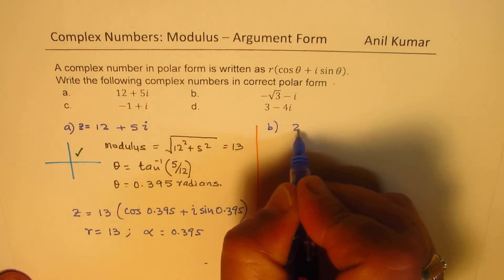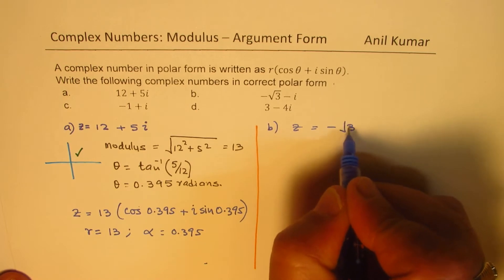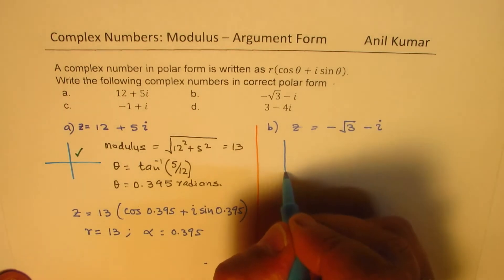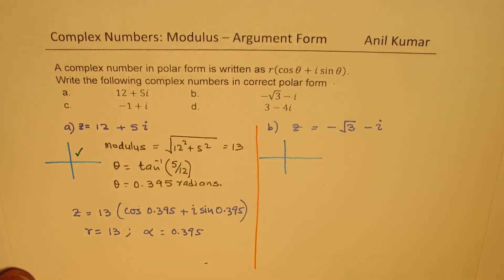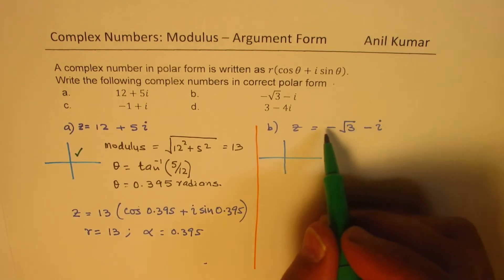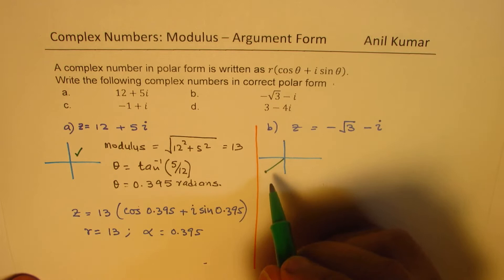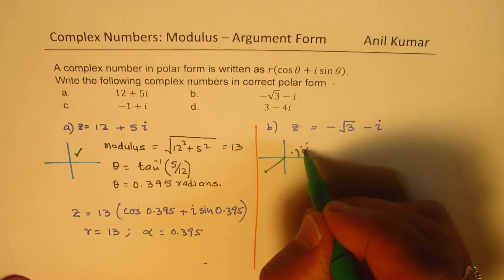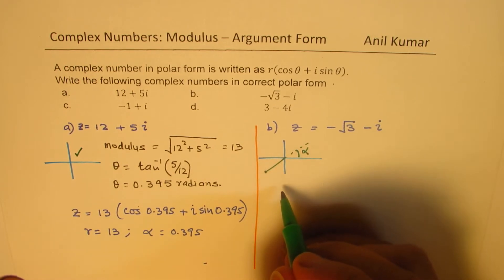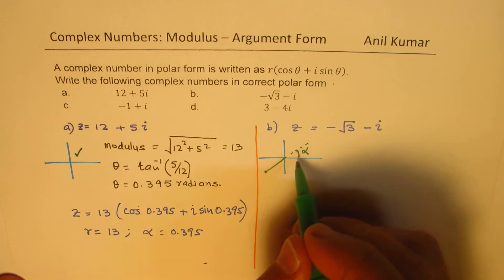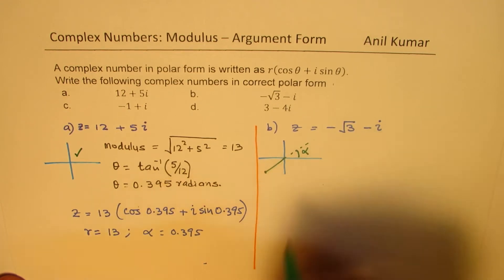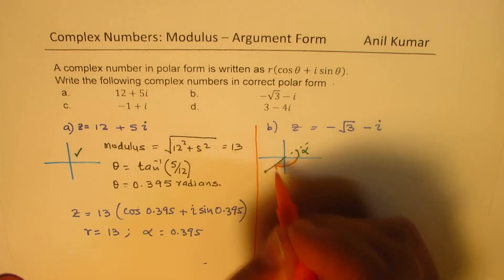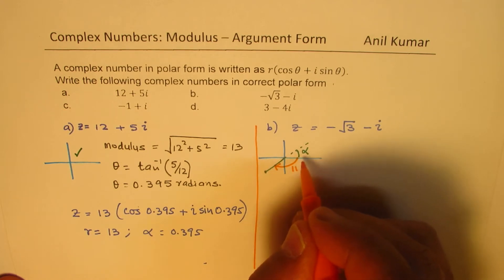For part (b), z = −√3 − i. Both the real and imaginary parts are negative, so this complex number is in quadrant 3. When a complex number is in quadrant 3, the argument is given by α − π, so we need to subtract π from the reference angle α.